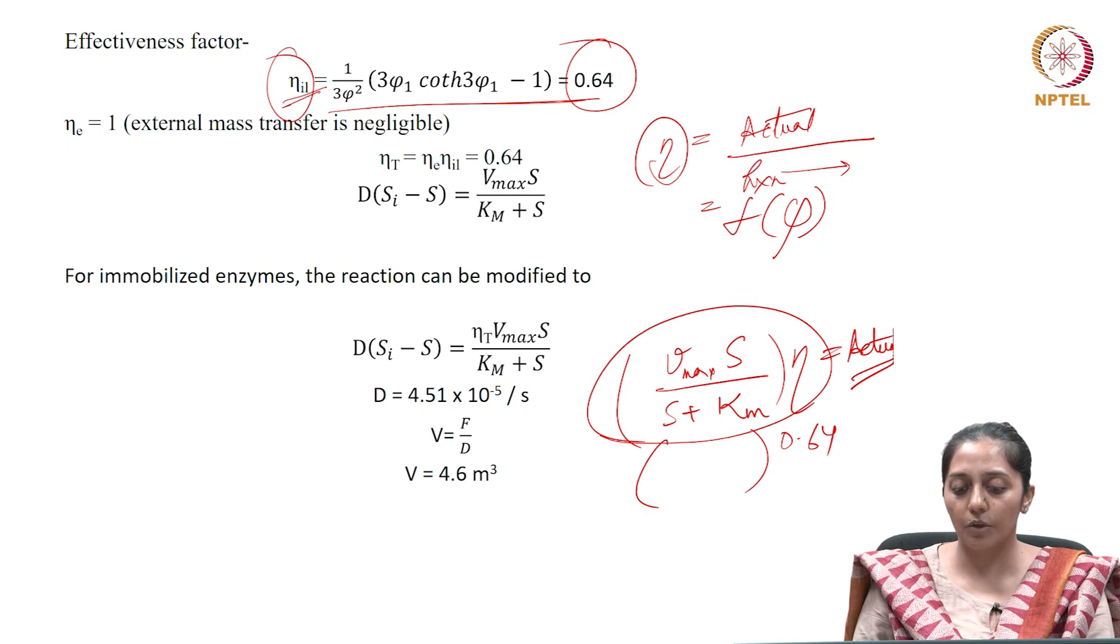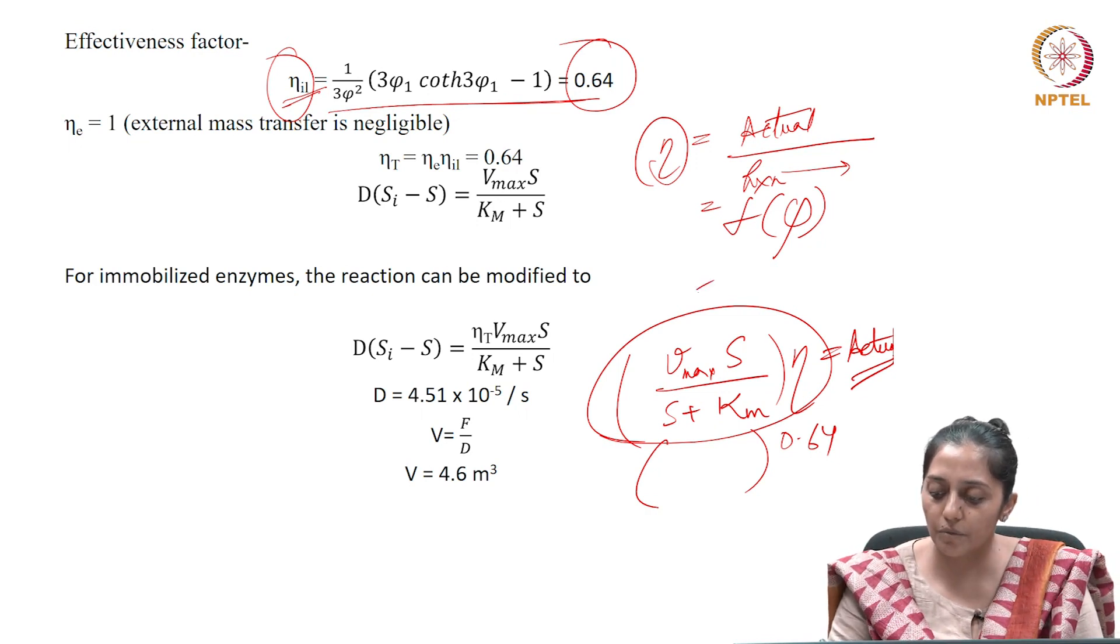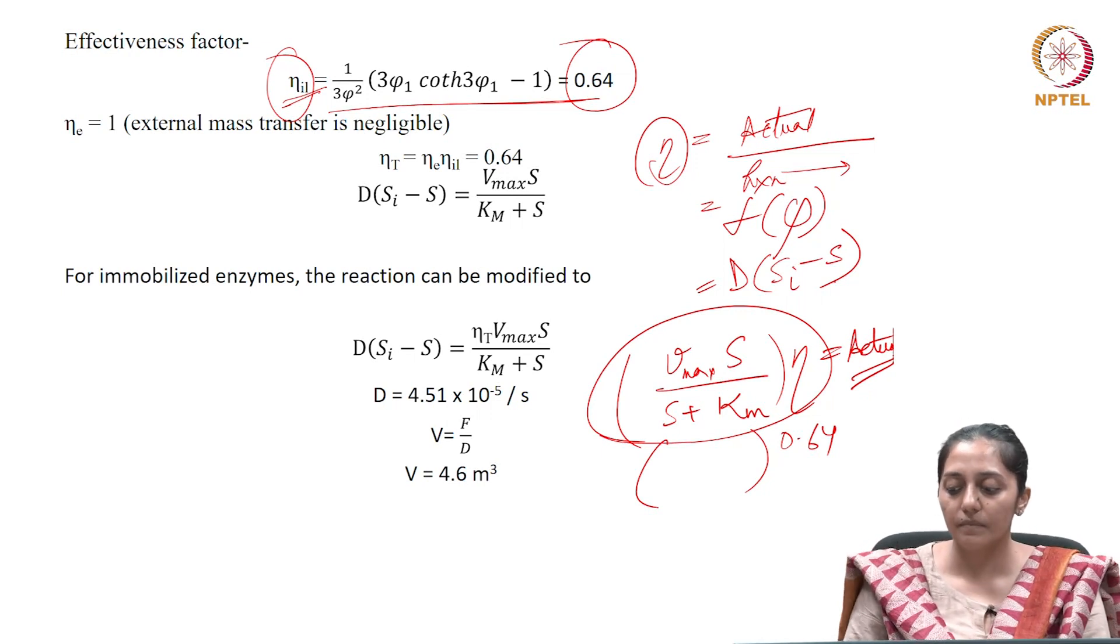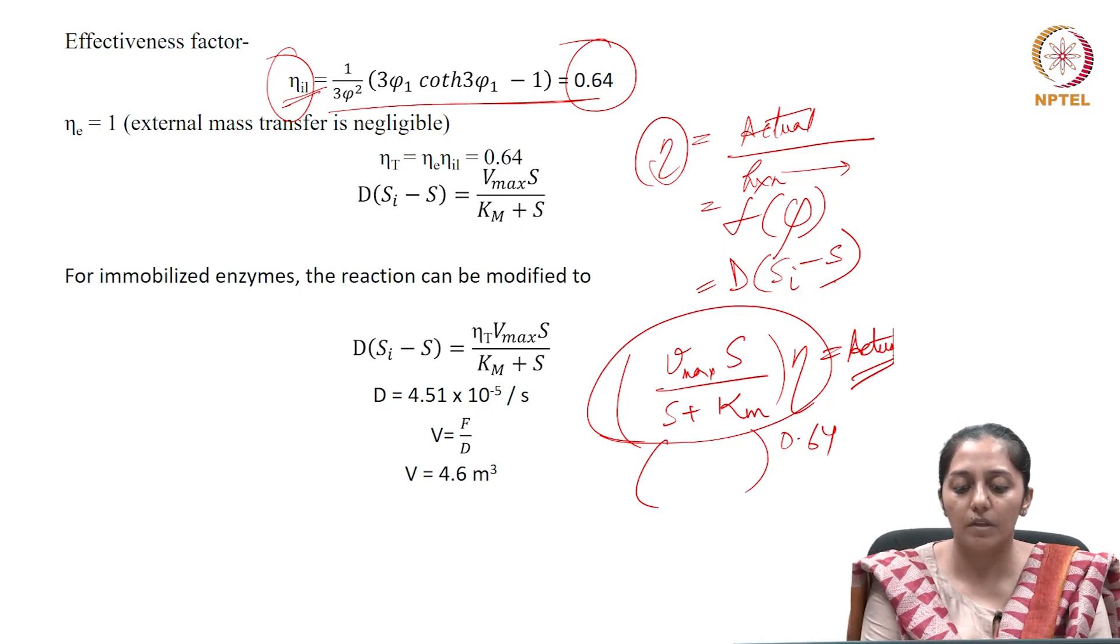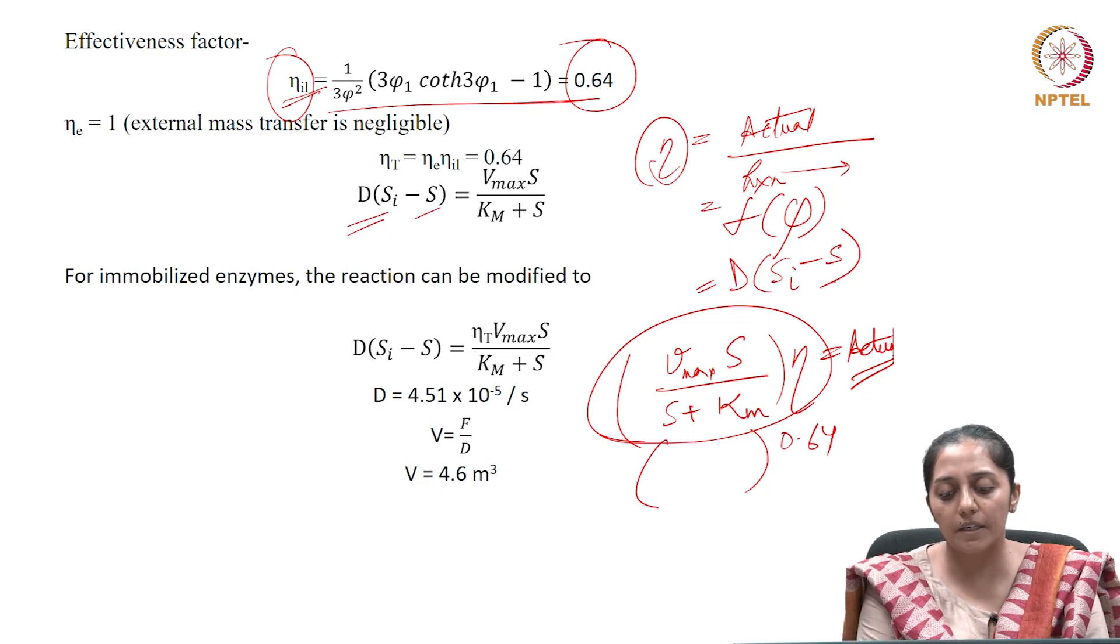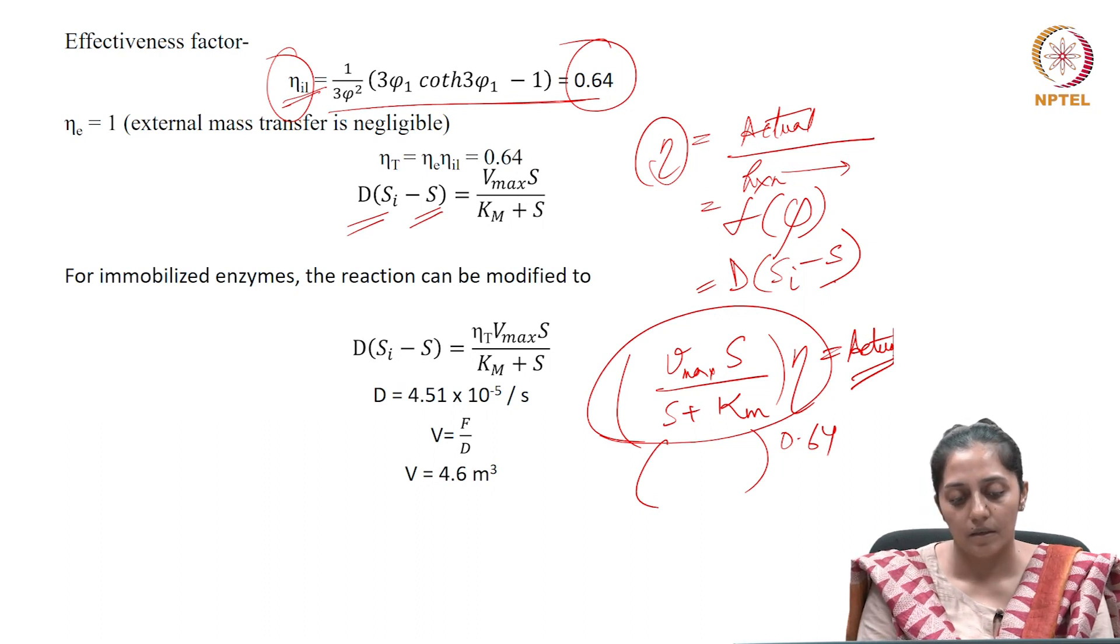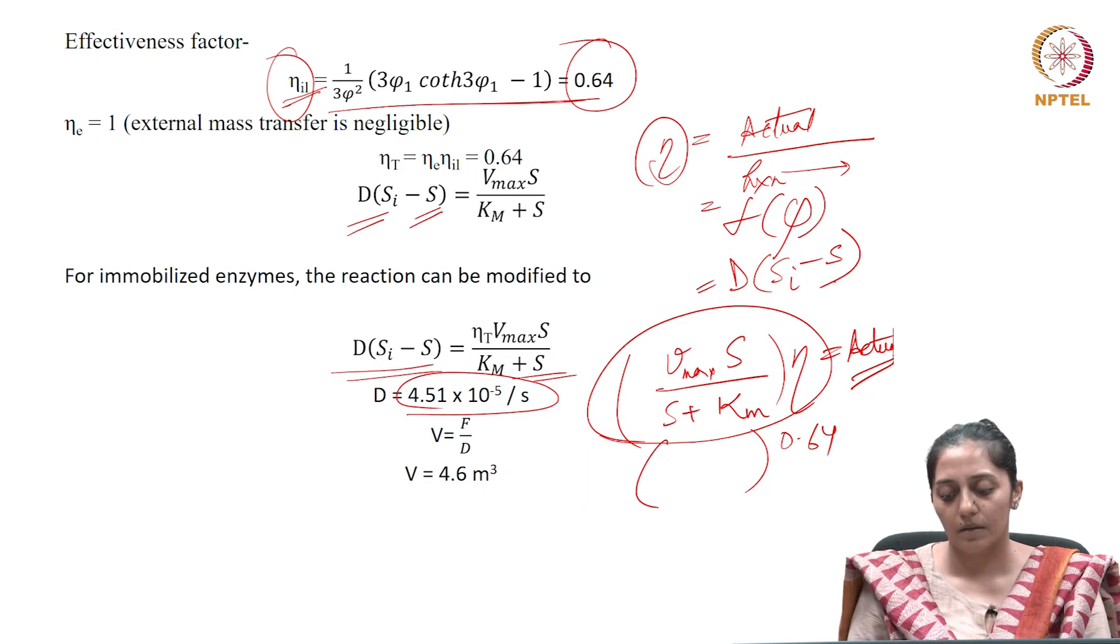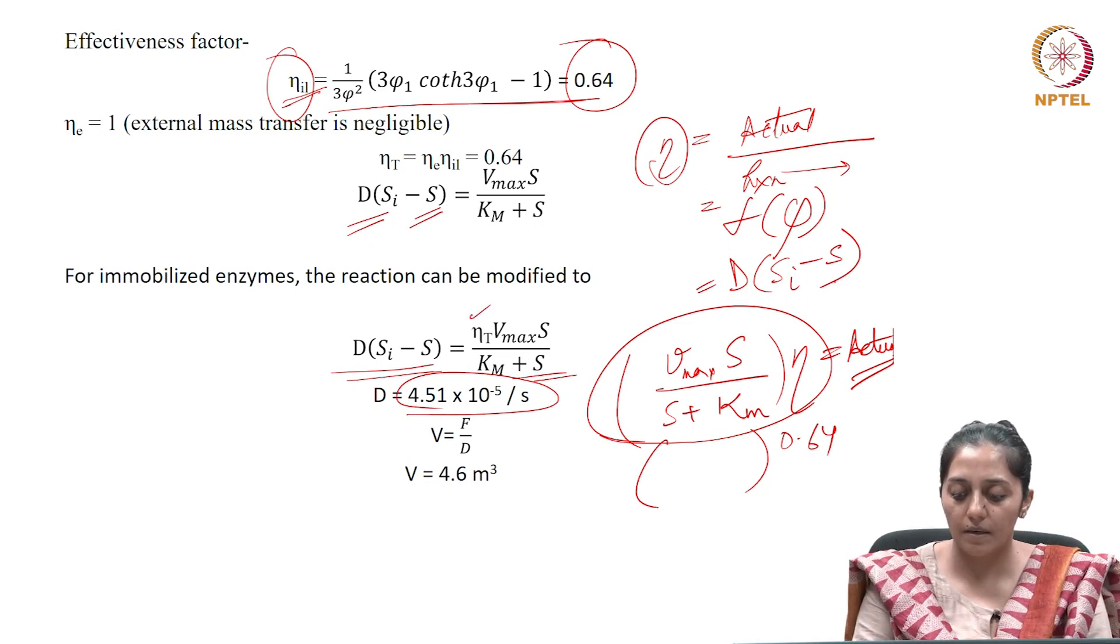Since there is no accumulation, this equals the transfer rate in the reactor, which is the input rate minus output rate: D(Si - S). Substituting all values, the dilution rate can be calculated.